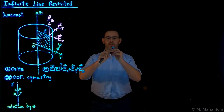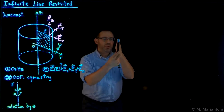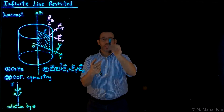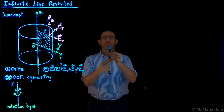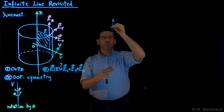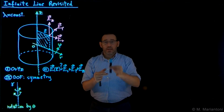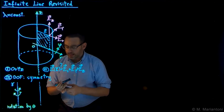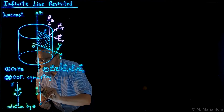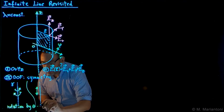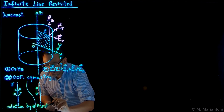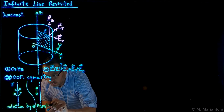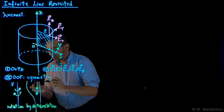The second symmetry we can identify for this line: looking at the line from the side, when I translate it up and down by any displacement, the line remains exactly the same. Since it's infinite, if we displace it upward or downward by any arbitrary amount, the line remains exactly the same. The second symmetry is a translation symmetry by any displacement upward or downward.